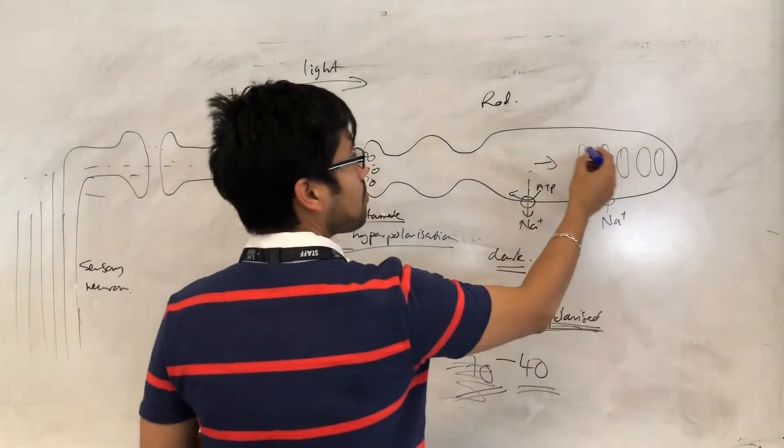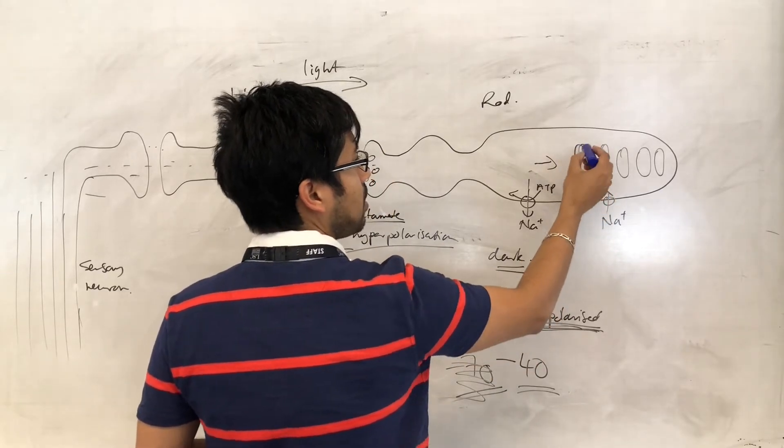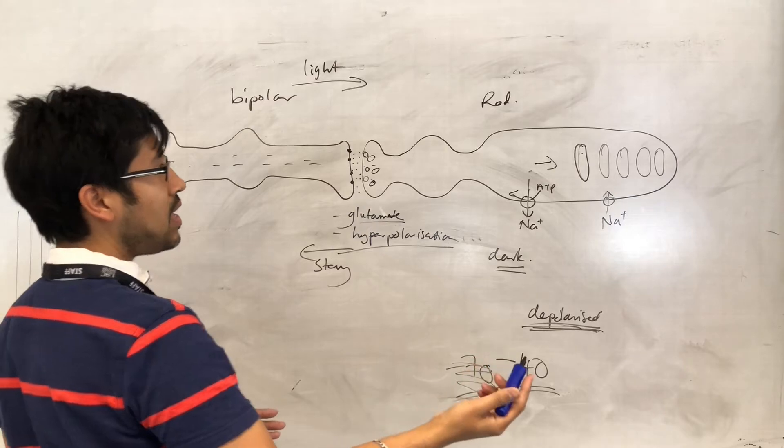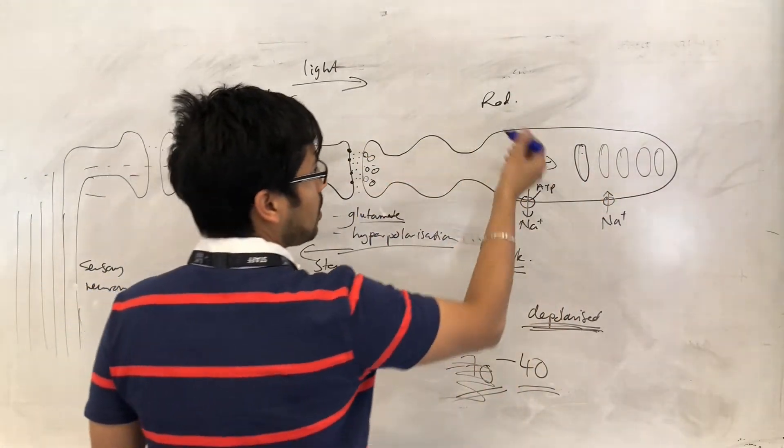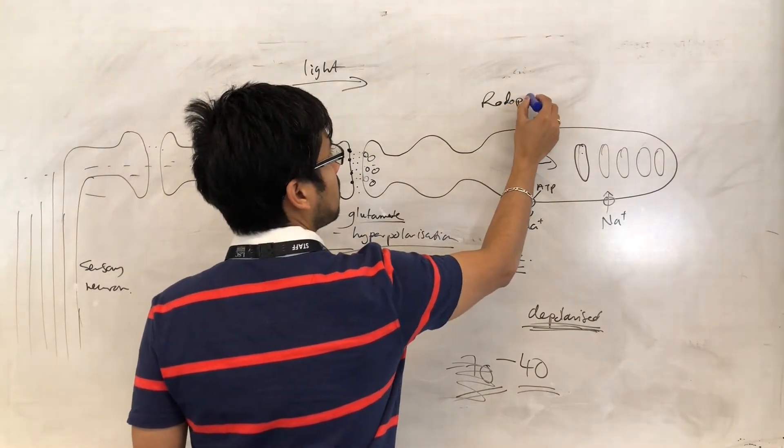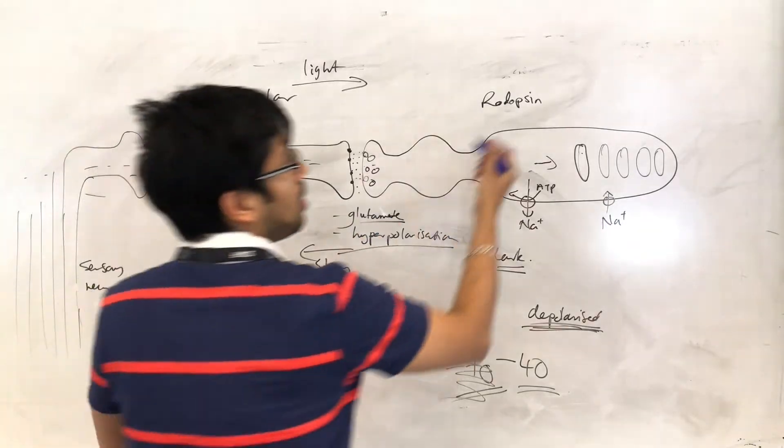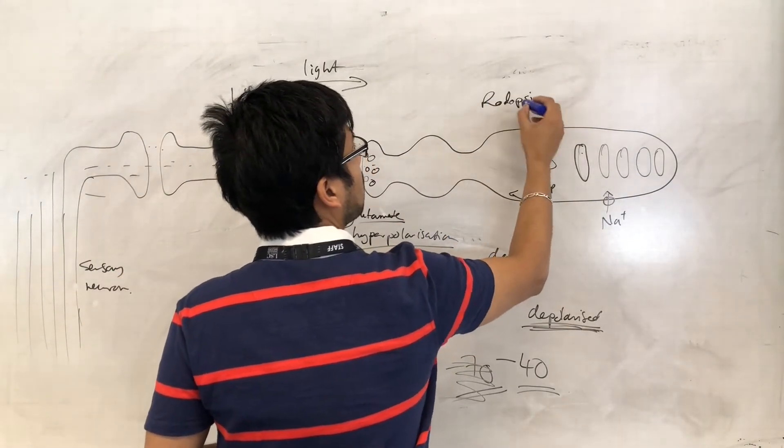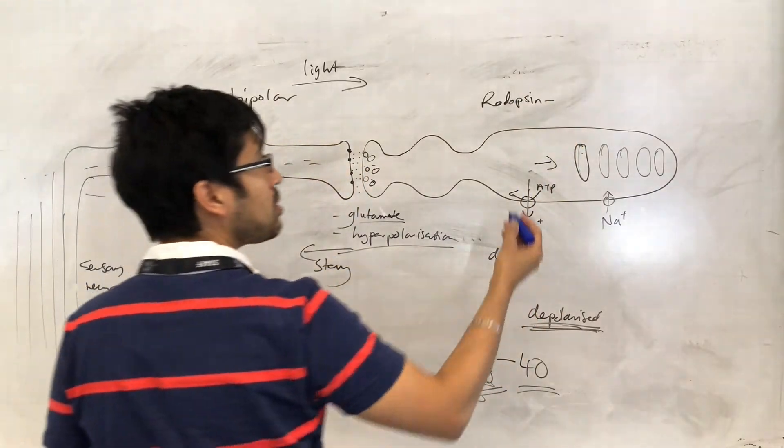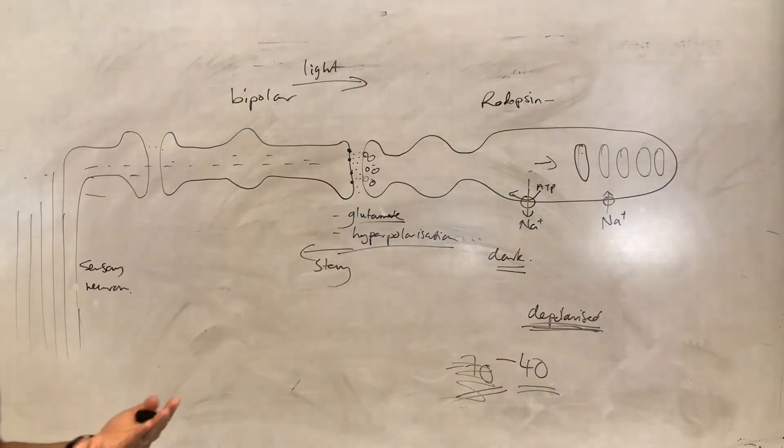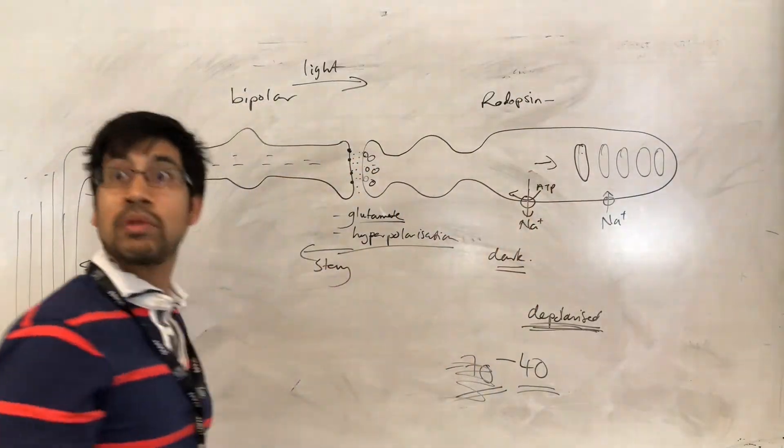What happens is that rhodopsin, so in these membrane-bound sacs, the pigment rhodopsin is there. So rhodopsin is a combination of protein and non-protein component. Remember, proteins, by themselves, they can't act as pigments. They need something non-protein to allow them to act as pigment.